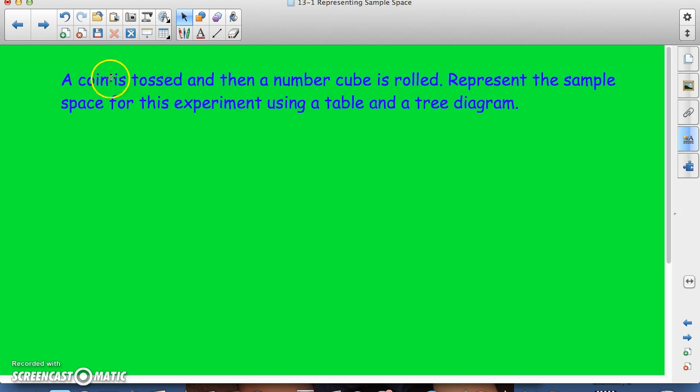So here, instead of two coins, we have a number cube, which is like a die, numbered one through six. And then we also have a coin. So see if you can set up your table on your own.